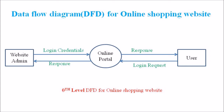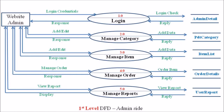Moving to the level 1 DFD at the admin site, we can see five different processes: login, manage category, manage item, manage order, and manage reports. There are also five data stores: admin detail database, product category database, item list database, order detail database, and user report database.